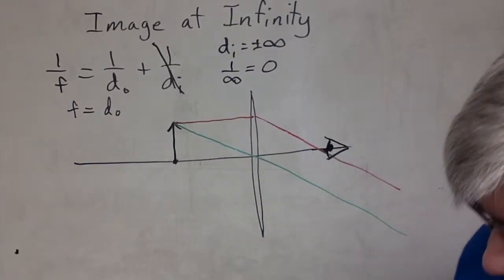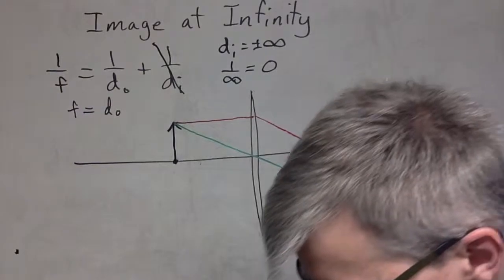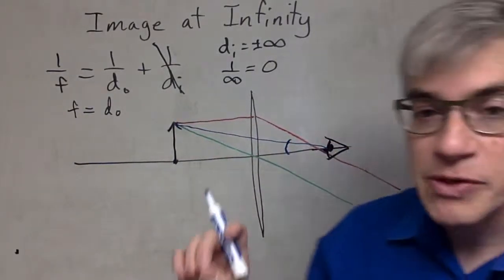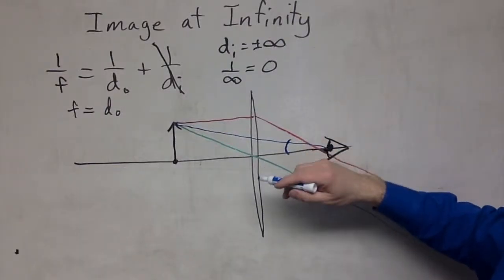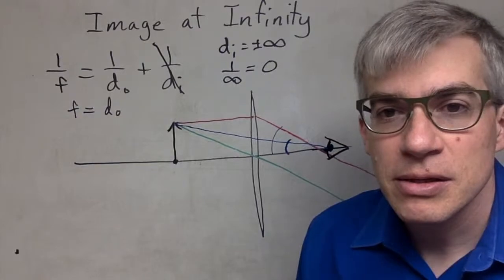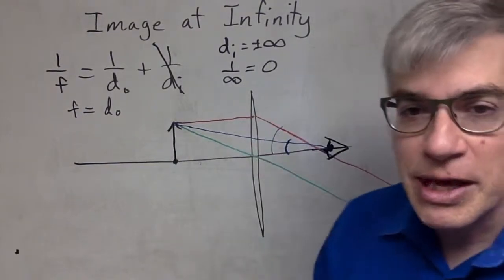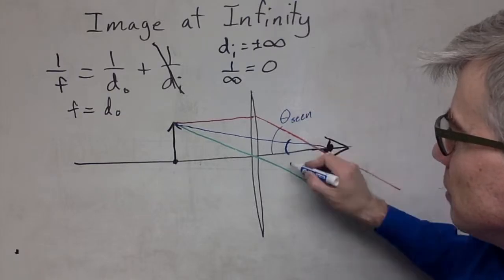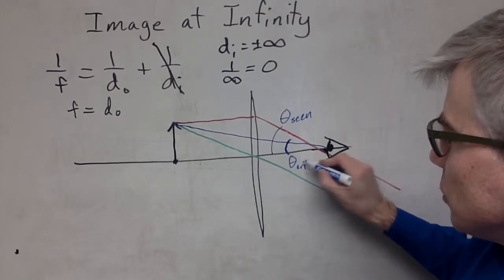If they didn't have the lens, they would effectively see the object as being that big in terms of angle. But what they're seeing instead is that big. The image is effectively covering that much angle.